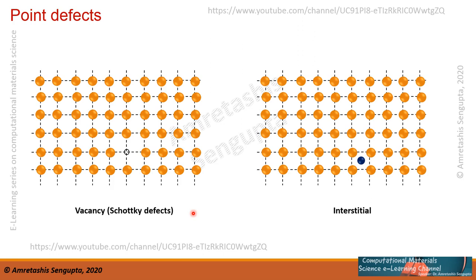Let's talk initially about point defects. Taking a simple 2D square lattice as an example — in a real case we have a much more complex 3D diagram, but just to simplify. If an atom is missing from its designated position, that is called a vacancy, and sometimes it is also called a Schottky defect. One or maybe more atoms might be missing, so these kinds of point defects are known as Schottky defects or vacancies.